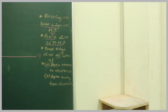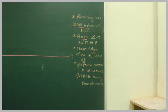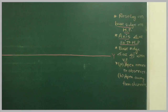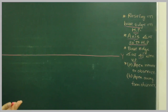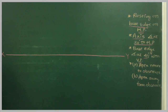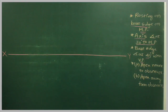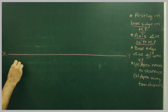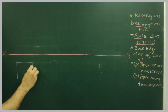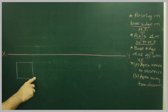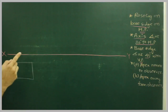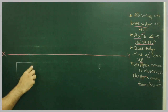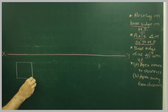First we will say: if the axis is inclined at 30 degrees to HP, then first we will draw the axis perpendicular to HP. So the top view will give you the true shape, and in the top view we will draw a square. Because it is resting on one of its base edges, so the base edge has to come on the right-hand side.